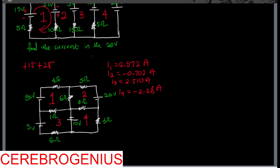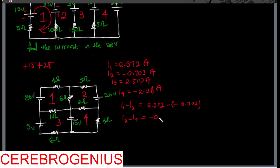So if you want to get the in-between branch currents — for example, the current through a resistor shared between loop 1 and loop 2 — you subtract: I1 minus I2, which is 2.572 minus minus 0.702. Similarly, for the branch between loop 2 and loop 4, that would be I2 minus I4, which is minus 0.702 minus minus 2.28. The arrangement does not matter; only the sign will differ. You can easily get all branch currents this way.